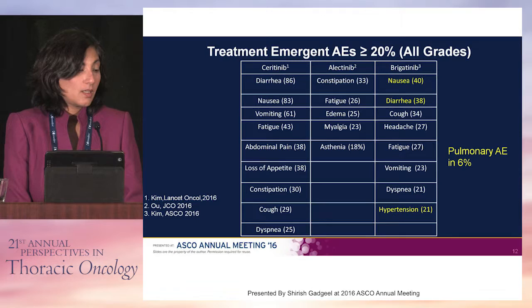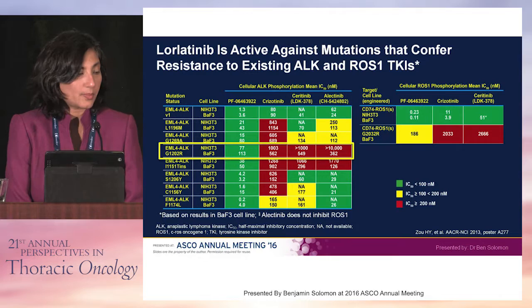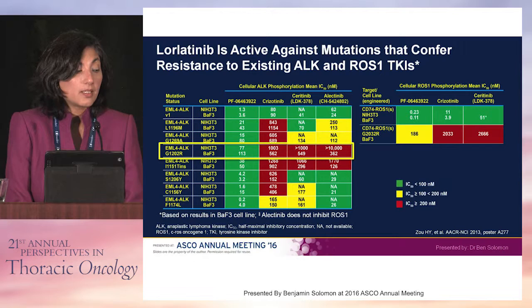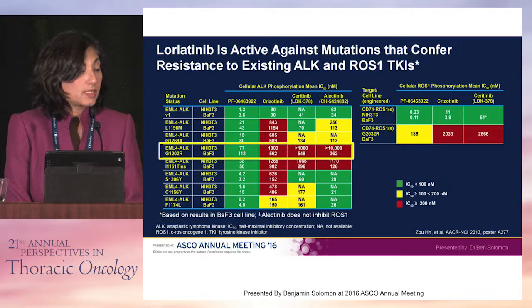This also illustrates the toxicity across all three agents. In addition to pulmonary AEs seen in 6%, brigatinib has also been known to cause diarrhea, nausea, and hypertension. Lorlatinib is the third-generation inhibitor, currently in trials, notable for having activity against some known acquired resistance mutations — in particular, the G1202R resistance mutation, which confers resistance to some first and second-generation ALK inhibitors, and activity against other resistance mutations as well.